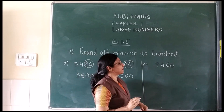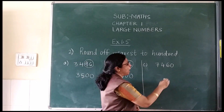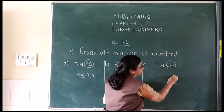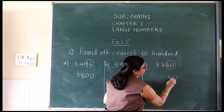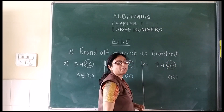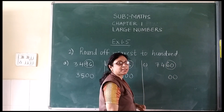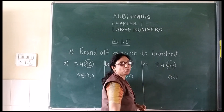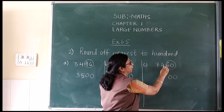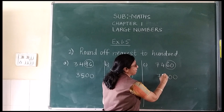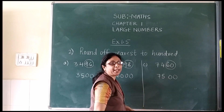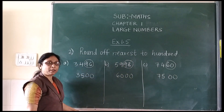Go for the next sum. Again circle 2 numbers, place 2 zeros. The first number in the circled digits is 6, which is more than 5. So add 1 to 74. 74 will become 75.